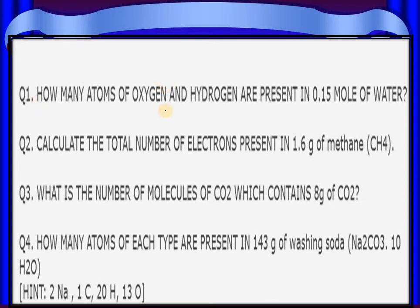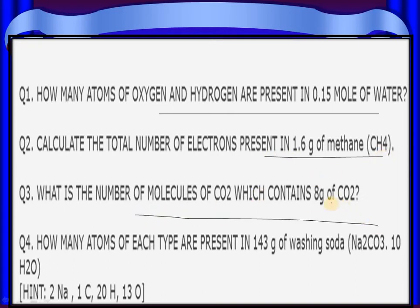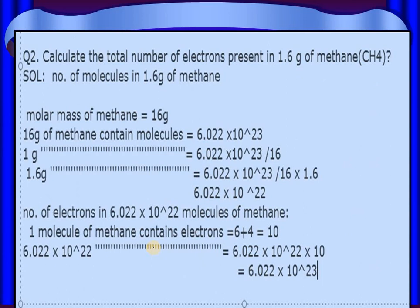Here are some numerical questions: how many atoms of oxygen and hydrogen are present in 0.15 mole of water? Calculate the number of electrons present in 1.6 grams of methane. What is the number of molecules of carbon dioxide which contain 8 grams of oxygen? How many atoms of each element are present in 143 grams of washing soda? I will now discuss question number 2: what is the number of electrons in 1.6 grams of methane?